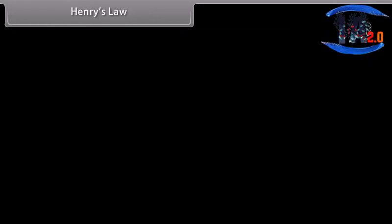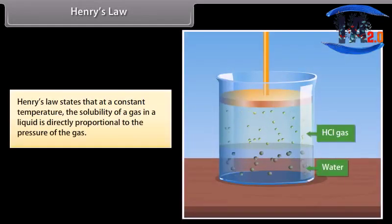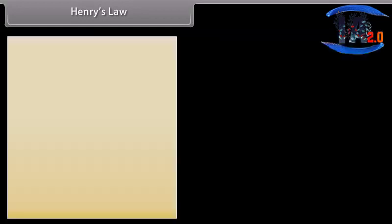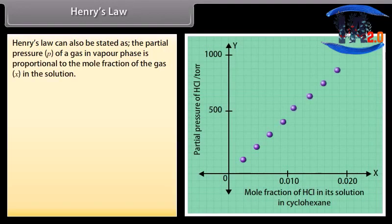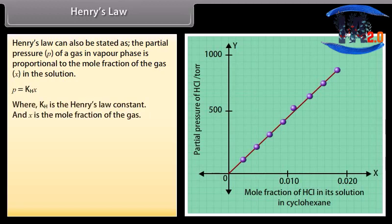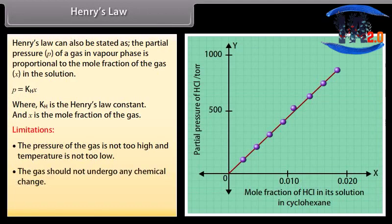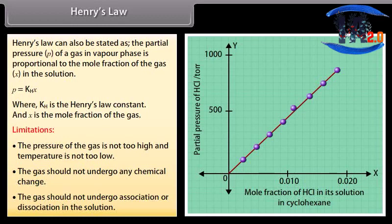Henry's law states that at a constant temperature, the solubility of a gas in a liquid is directly proportional to the pressure of the gas. It can also be stated as: the partial pressure of a gas in vapor phase is proportional to the mole fraction of the gas in the solution. Mathematically, P = K_H × X, where K_H is the Henry's law constant and X is the mole fraction of the gas. Limitations: the pressure of the gas should not be too high and temperature not too low; the gas should not undergo any chemical change; the gas should not undergo association or dissociation in the solution.